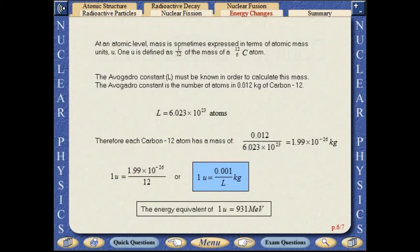At an atomic level, mass is sometimes expressed in terms of atomic mass units, U. One U is defined as one twelfth of the mass of a carbon-12 atom.